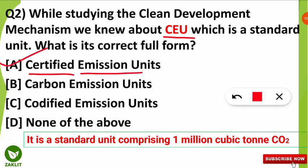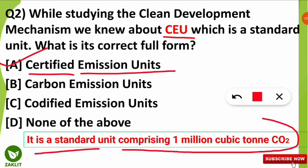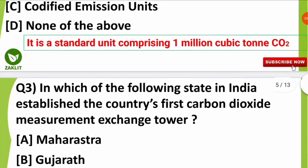The correct full form of CEU is Certified Emission Units, which is a standard unit comprising 1 million cubic tons of carbon dioxide. Carbon dioxide is the major gas responsible for global warming, so 1 CEU equals 1 million cubic tons of carbon dioxide. These are small but important details you should note down.